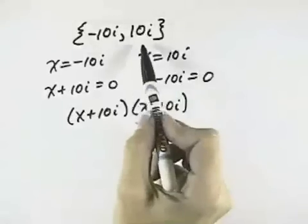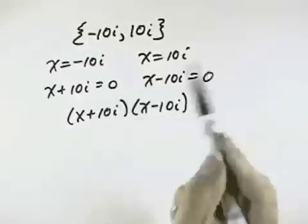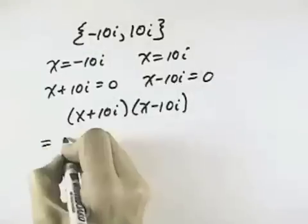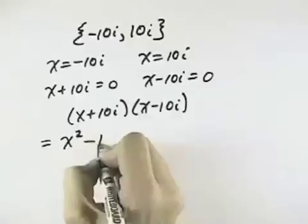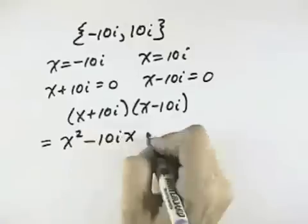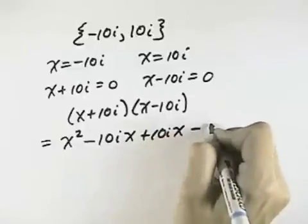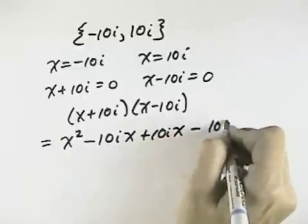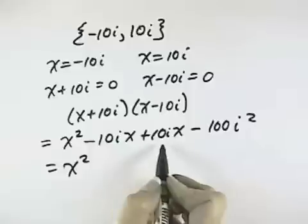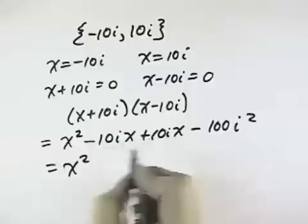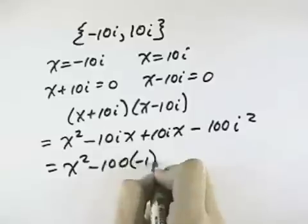From the solution, I can work backwards to get to the factor. From the factors, I can multiply them to get to my equation. So x times x is x squared, then minus 10i times x plus 10i times x, and then minus 10 times 10 is 100i squared. So I have x squared, and 10ix and 10ix cancel — negative and positive — then minus 100 times i squared, which is negative 1.